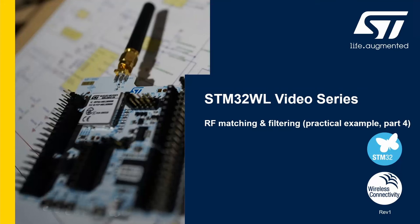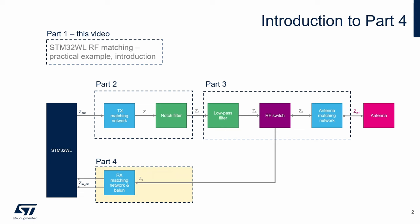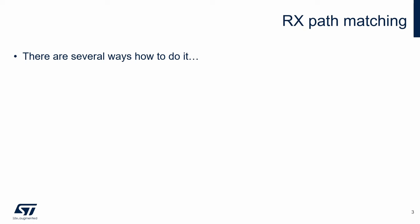Hello. This video is the last part of a series on practical RF impedance matching and filtering of the STM32WL. In this part, we focus on the receiver matching network and balun. As mentioned in the first part of this series, there are several ways to do this task that differ in complexity. In this example, we show the simplest method based on reusing an existing STM32WL design, which should be enough for most designs.